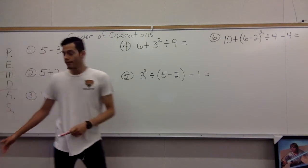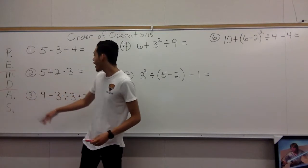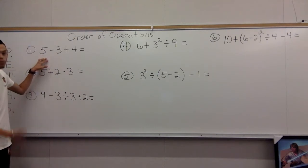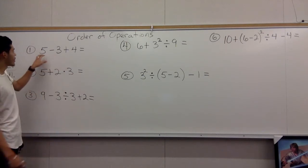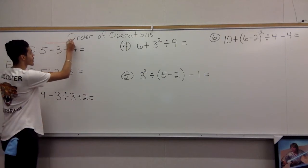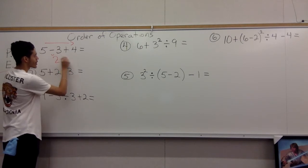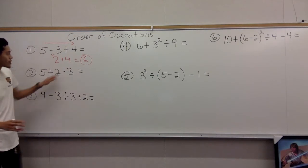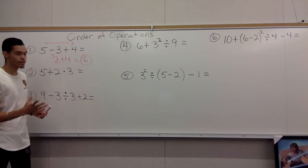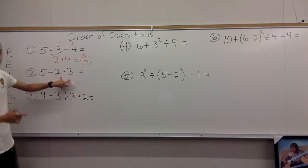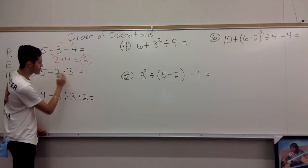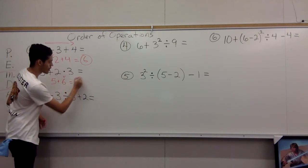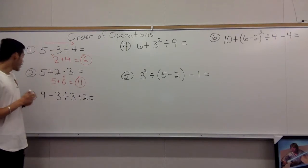Write PEMDAS at the top of your paper — it's helpful. Number one: five minus three plus four. Any parentheses? No. Exponents? No. Multiplication or division? No. Addition and subtraction? Yes. Working left to right: five minus three is two, two plus four is six. Answer is six. Number two: five plus two times three. Multiplication takes priority — two times three is six. Then five plus six gives eleven.